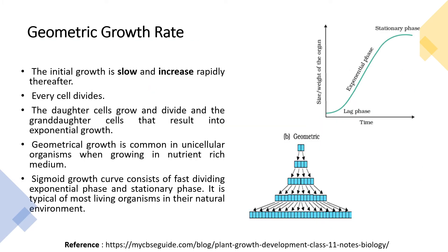In geometric growth rate, initial growth is slow and then increases rapidly. Every cell divides, the daughter cells grow and divide, and the granddaughter cells result in exponential growth. The graph plots weight or size of the organ against time and shows distinct phases: the log phase, lag phase, exponential phase, and stationary phase.